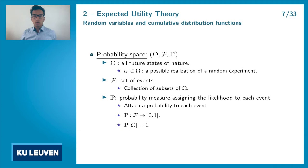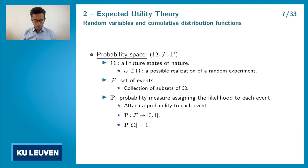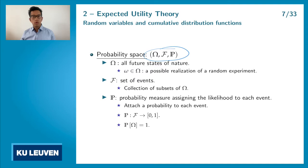In this course, we will use probability theory a lot, so here I will give a brief overview of the most important concepts. We start with a probability space, which is used to model a random experiment. A random experiment is an experiment where you do not know what the outcome will be. For example, if you toss a coin, you don't know if you get heads or tails. Or if you throw a die, you don't know what number you will get.